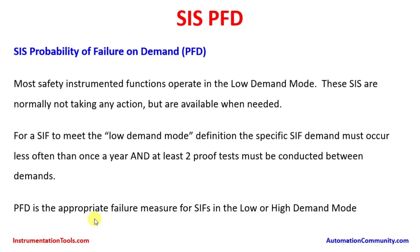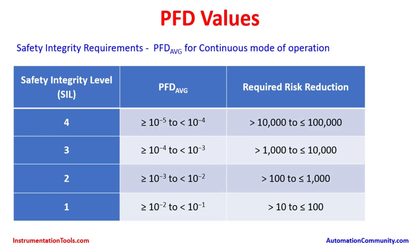PFD is the appropriate failure measure for safety instrumented functions in the low or high demand mode. Now we will go over the values of PFD. Safety integrity requirements — PFD average for continuous mode of operation. These are the different safety integrity levels from 1 to 4. With Safety Integrity Level SIL 1, the PFD average should be more than 0.01 and up to 0.1, that is 10 to the power minus 2 to 10 to the power minus 1. The required risk reduction, which is the inverse of the PFD average, should be more than 10 and less than 100.